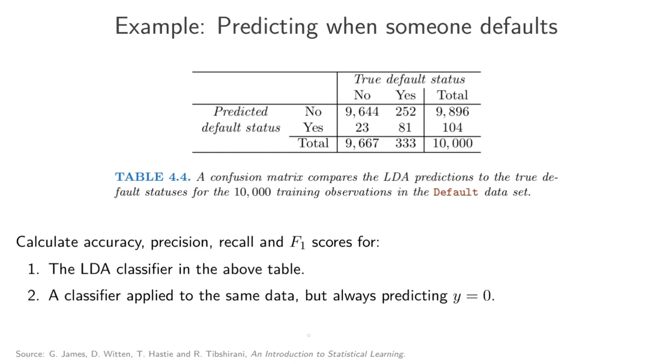This example actually comes from this textbook, An Introduction to Statistical Learning, a really nice textbook. It's specifically an LDA classifier where they're trying to predict whether someone is going to default, I think, on their credit card.